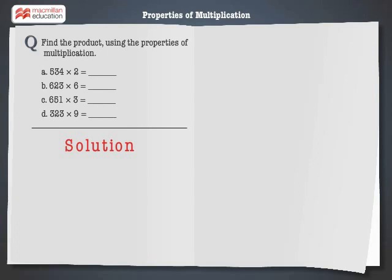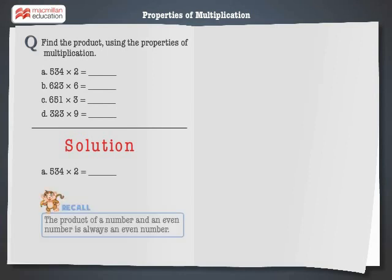Let's solve the first problem. 534 multiplied by 2 is equal to dash. Let's recall that the product of a number and an even number is always an even number. 534 multiplied by 2 is equal to 1,068.